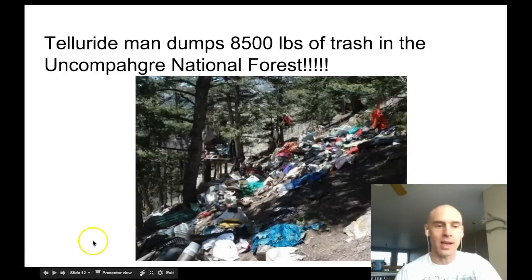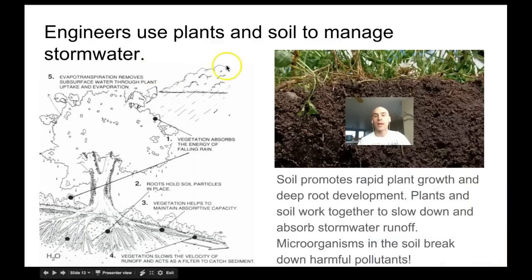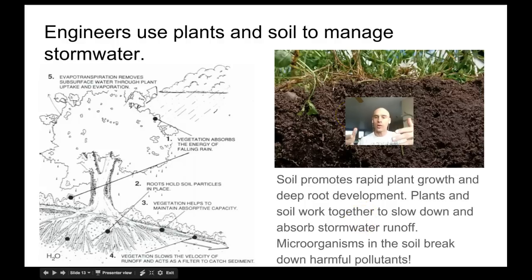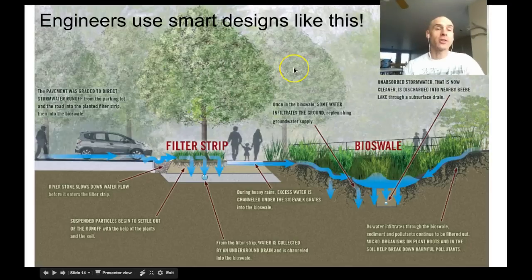As rain begins to fall and carries that material down the mountainside, all of it ends up in rivers and streams. So engineers use plants and soil to manage stormwater. The soil promotes rapid plant growth and deep root development. Plants and soil work together to slow down and absorb stormwater runoff. As water goes into the soil, microorganisms break down harmful pollutants - that's why well water, like the 180-foot well we had in Alaska, can be completely clean and pure.